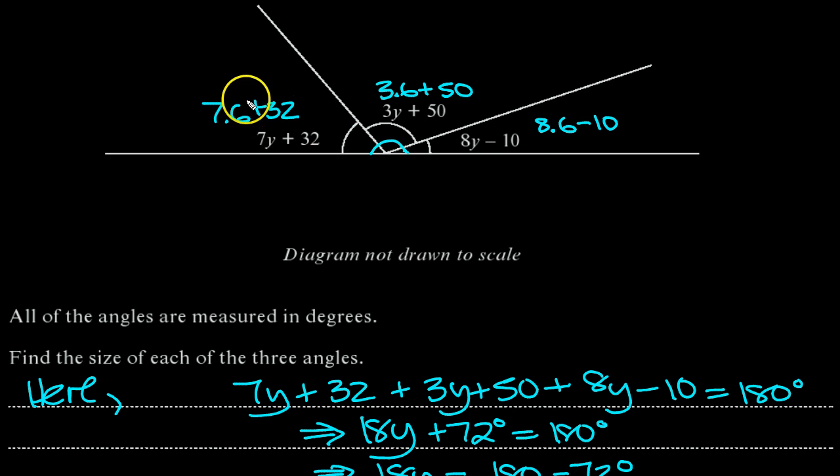42 plus 32 is 74. This one, 18 plus 50 is 68. And this one, 8 times 6 is 48 minus 10, which is 38 degrees.